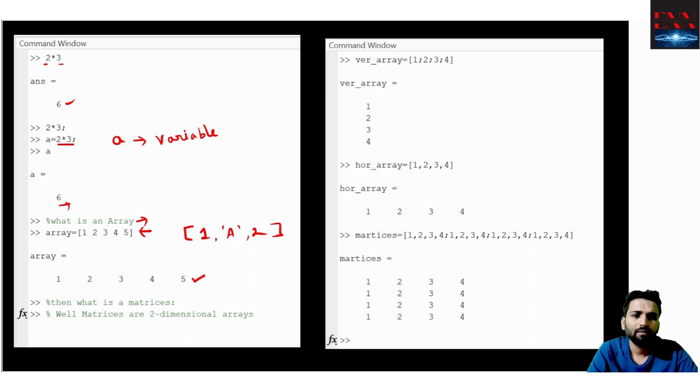Similarly, matrices is a 2 dimensional array. Here the dimension is only 1. This is a 1 dimension or a 1 row. If I use a vertical array, like this is a vertical array. To shift the column, we use semicolon. Like if I take an example of the array I have earlier used.